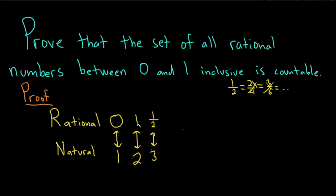And then we have 2 over 2, but we already have 2 over 2, it's 1. So now let's consider all fractions with a denominator of 3. So 1 over 3 would be a choice that we haven't already used, so we'll send that to the number 4.